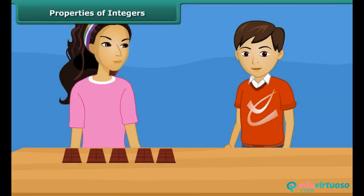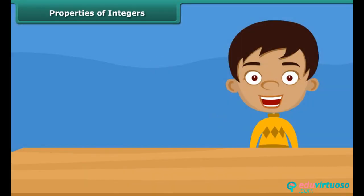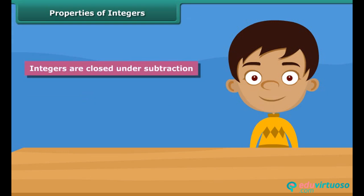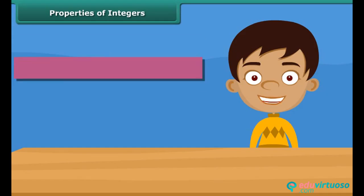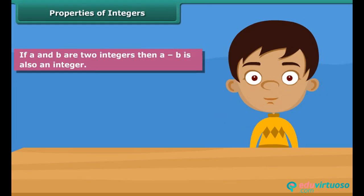Look at Rina — she has five chocolates. If she gives three chocolates to her brother, then how many chocolates are left with Rina? She is left with two chocolates. In this example we see that the difference of two integers is also an integer. Hence integers are closed under subtraction. In general, for any two integers A and B, A plus B is an integer, and A minus B is also an integer.